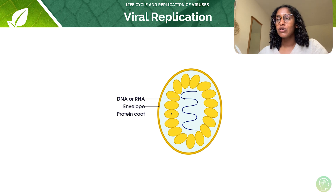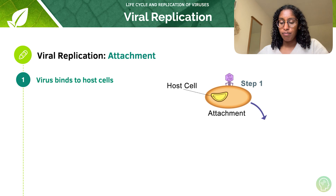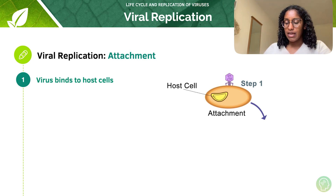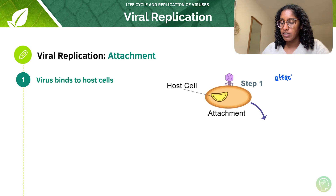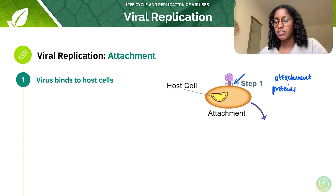Viruses do not undergo cell division. They infect a host cell and use it to replicate themselves and to produce new viral proteins. A virus binds to a host cell first of all — this is our host cell and this is our virus binding to our host cell. It binds using attachment proteins, which attach to the membrane of the host cell. Viruses can have different attachment proteins, which mean that different viruses infect different types of cells.